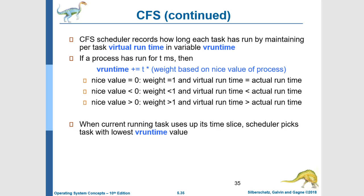Here is how we calculate the virtual run time of a task. Each time a task executes, we increase its virtual run time by the actual amount of time it has spent executing times a weighting. If the nice value is 0, the weight is 1. So a nice value of 0 means the preference for this task is neutral — we multiply by 1, which means the virtual run time is the same as the actual run time.